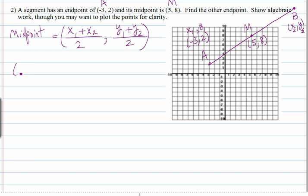So 5, 8 is negative 3 plus X2, that's what we're solving for, over 2, and 2 plus Y2, over 2. See, normally we're given the two endpoints, and we're solving for M. Here, we're given M, and we're solving for one of the endpoints, so we're working backwards.